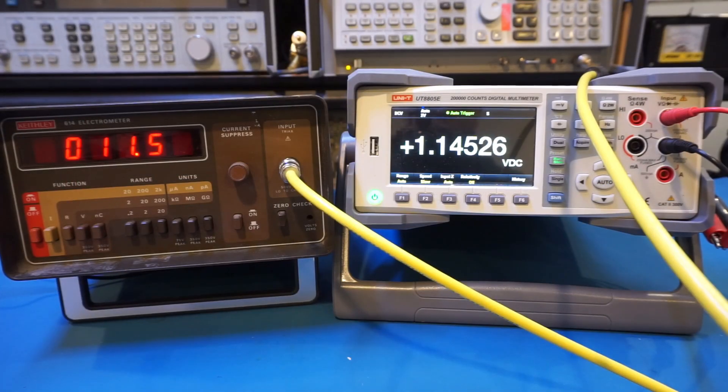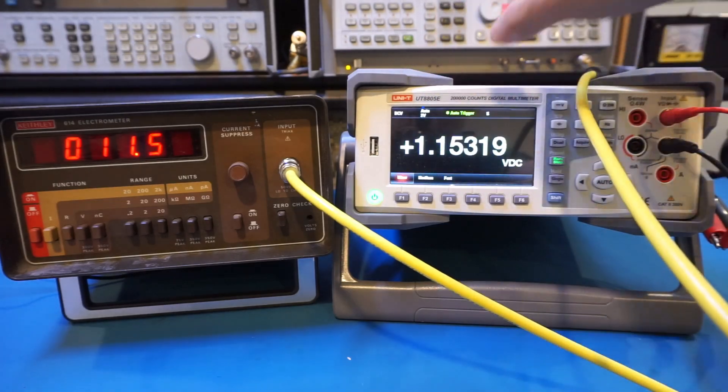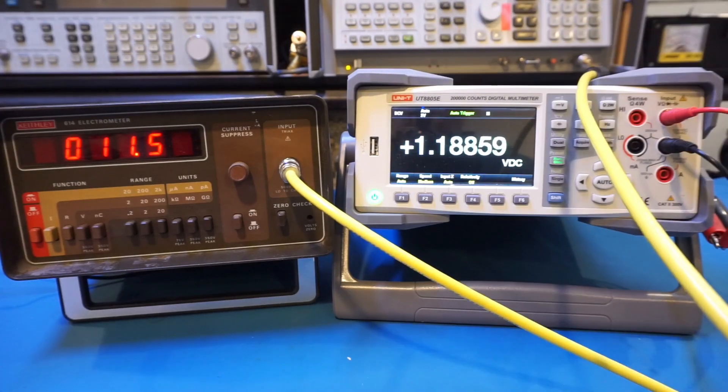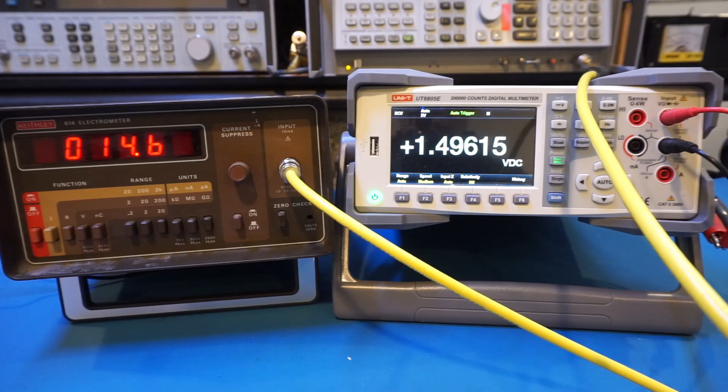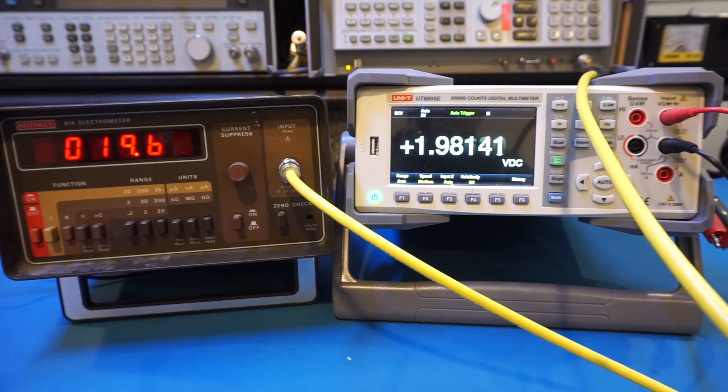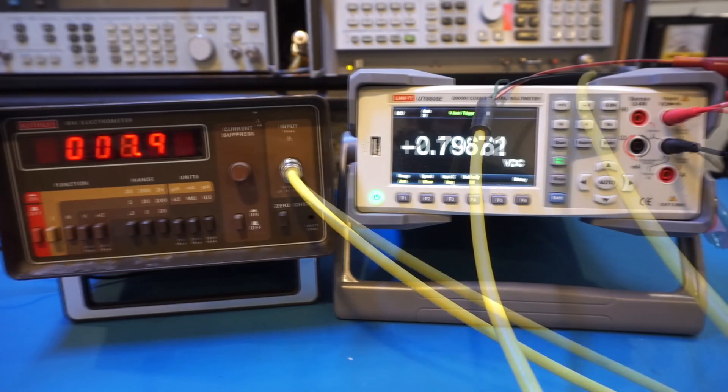And just out of curiosity, let's change the measurement update speed and see if that has any impact on the input impedance. So currently it's set at slow. Let's change it to medium. And you can see that we're actually getting higher input impedance. And by the look of it, it tops at around 20 gigaohms.